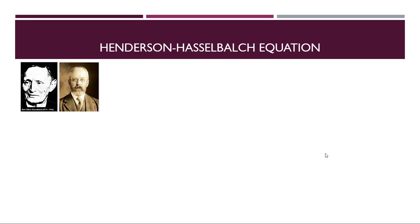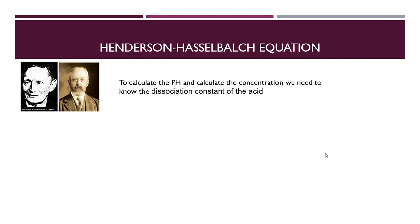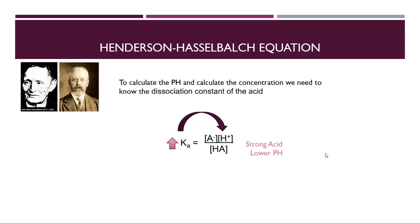To calculate the pH and concentration, we need to know the dissociation constant of the acid, represented by Ka. The A-negative is the conjugate base; the proton you already know; and at the bottom you have the whole acid in intact form. Ka is directly proportional to the proton concentration — more protons means a higher Ka value, meaning a strong acid, and the pH goes lower. The pKa is the antilog of Ka, so if Ka goes up, pKa goes down.